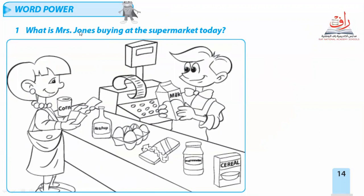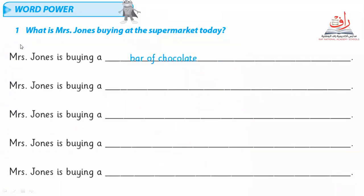We can see Mrs. John going shopping at the supermarket today. What is Mrs. John's buying? We can see: a cashier holding milk, corn, a bottle of ketchup, a carton of eggs, a bar of chocolate, a jar of mayonnaise, and cereal. Number one: Mrs. John's is buying a bar of chocolate.